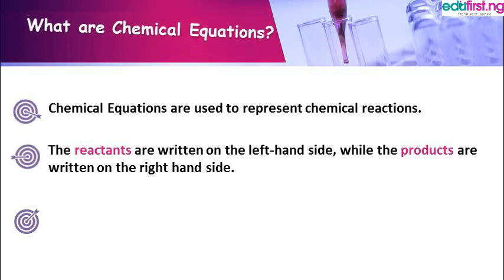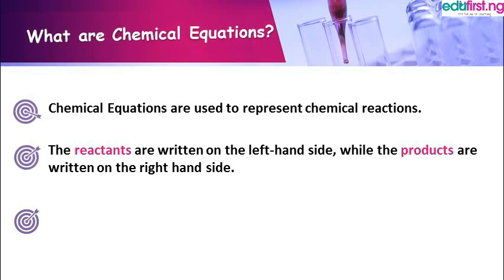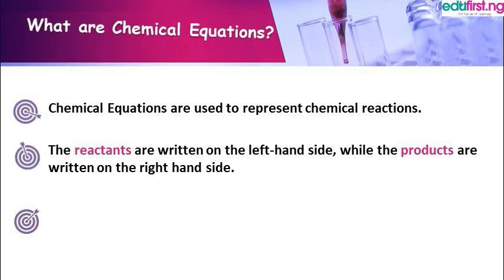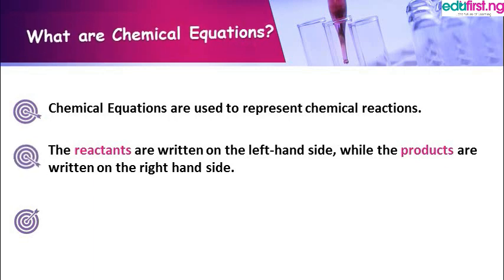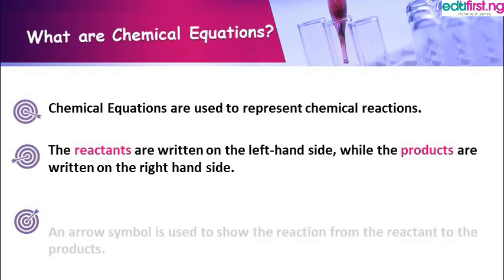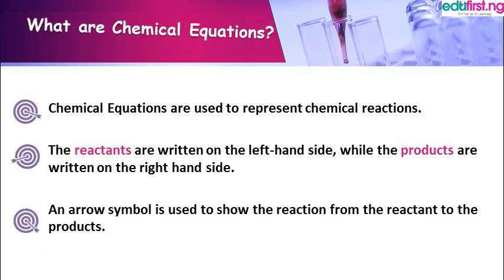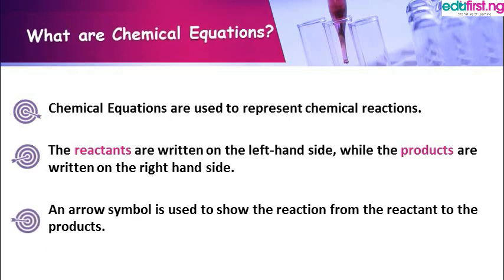The reactants are usually written on the left hand side while the products are written on the right hand side. In between the reactant and the product we have an arrow symbol, not an equal to sign but an arrow symbol. Please take note of that.